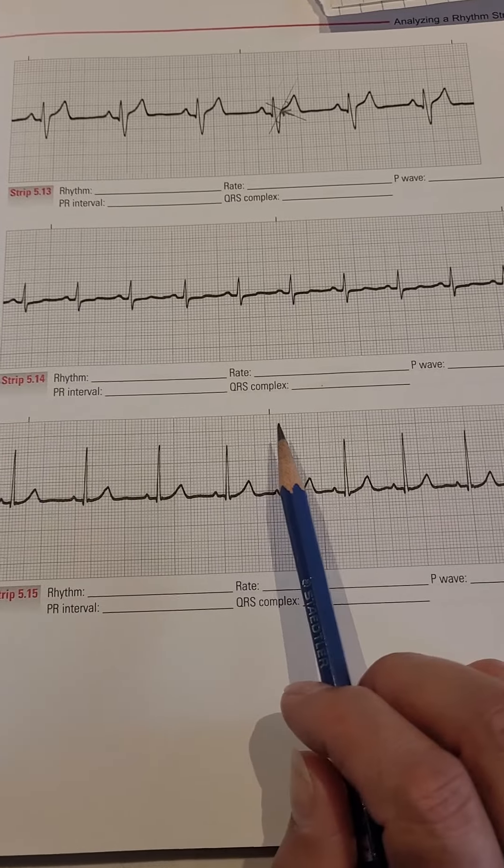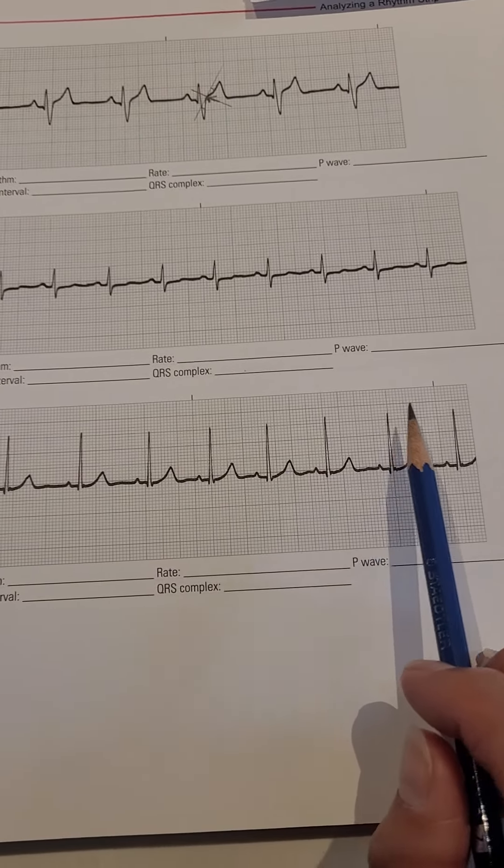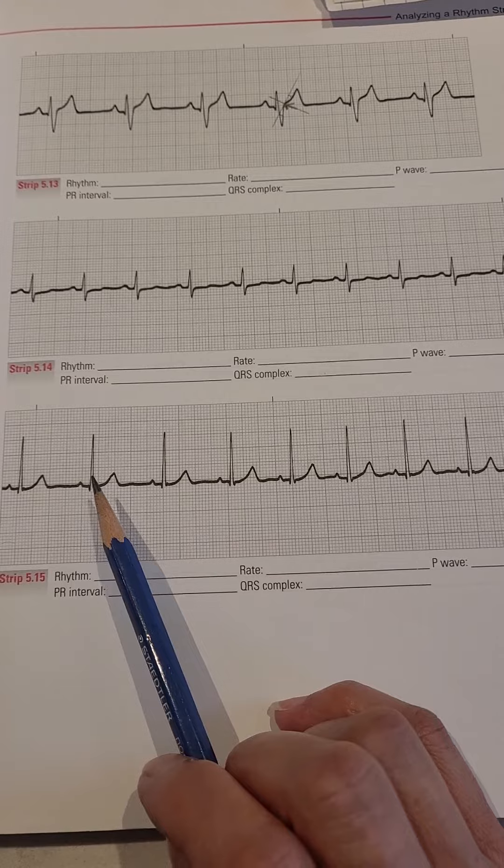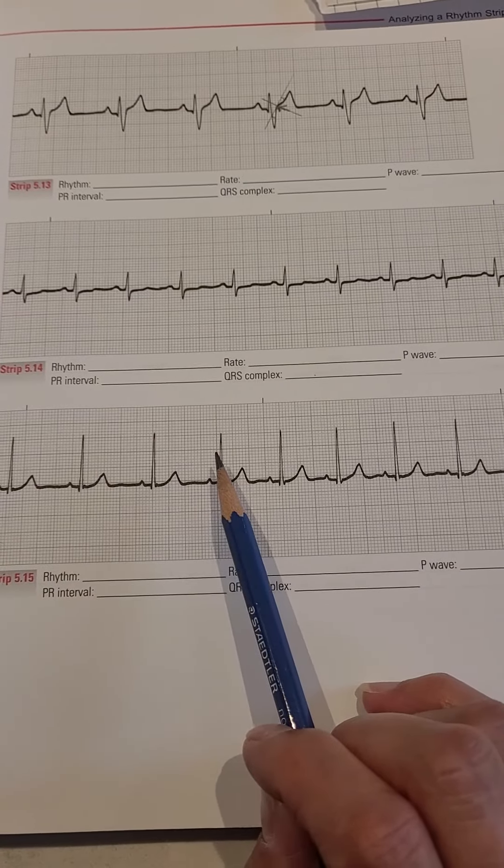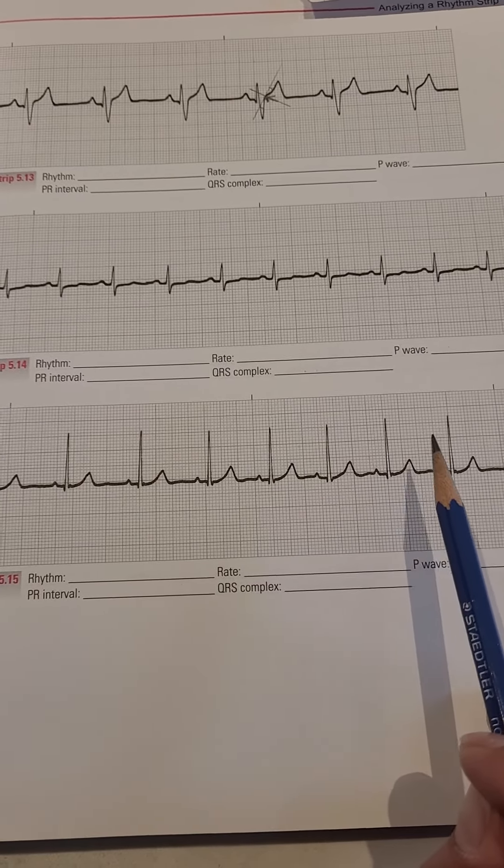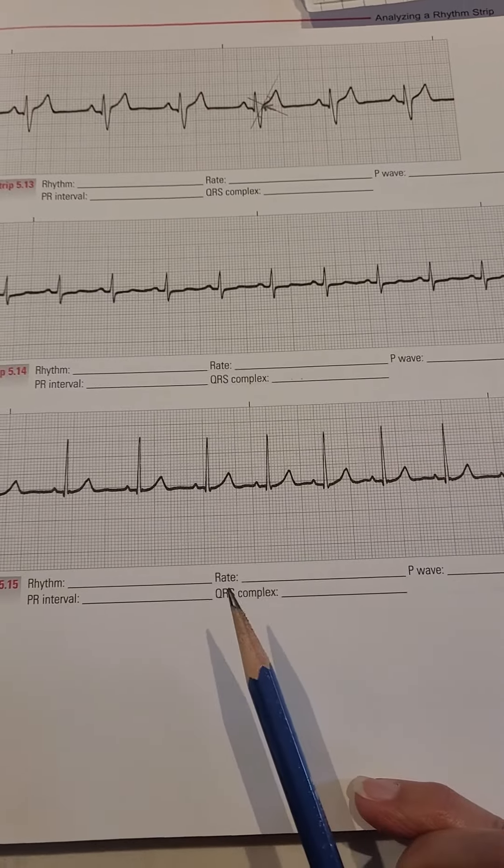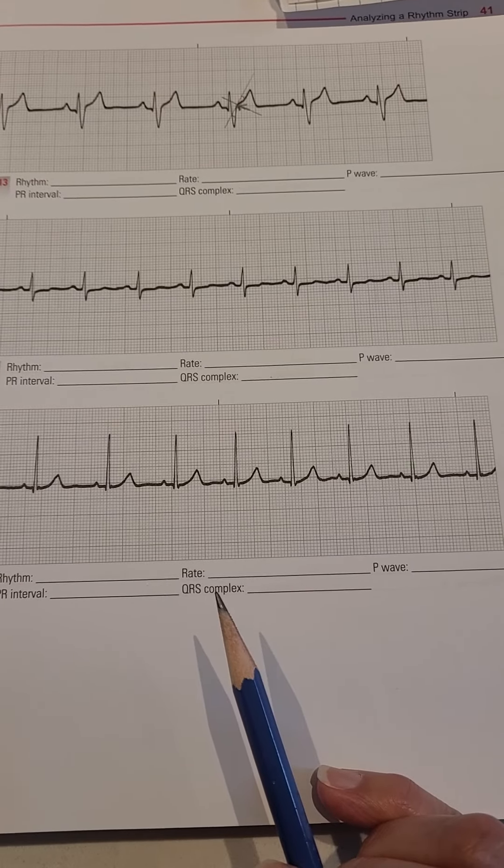Count the complexes: one, two, three, four, five, six, seven. Multiply by ten, giving you 70 beats per minute.